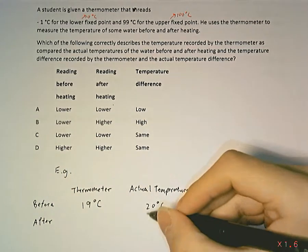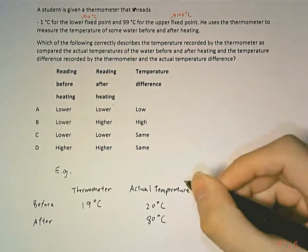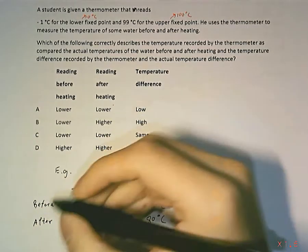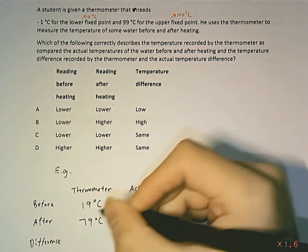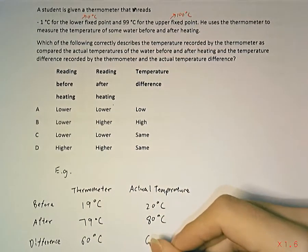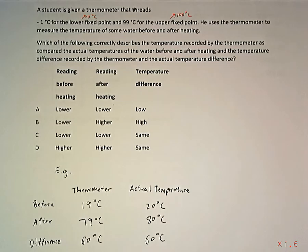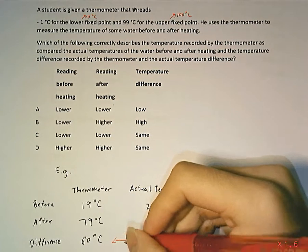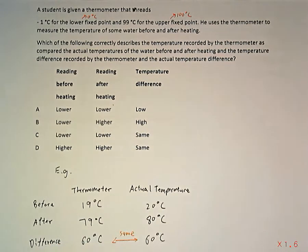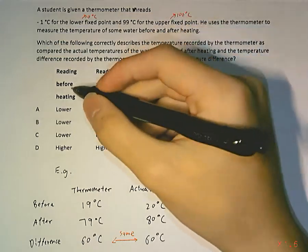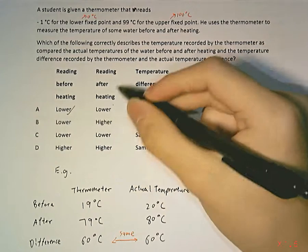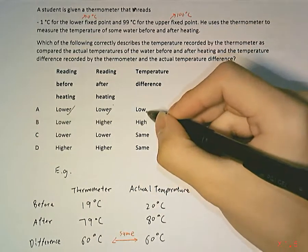After heating, maybe the water temperature is 80 degrees Celsius in real life, but the thermometer records it as 79 degrees Celsius. The difference is 60 degrees Celsius, and the thermometer also gives 60 degrees Celsius for the difference. So the uncalibrated thermometer gives you the correct temperature difference — it's just that all your readings are 1 degree Celsius lower. The reading before heating is lower, the reading after heating is lower, but the temperature difference is not lower.